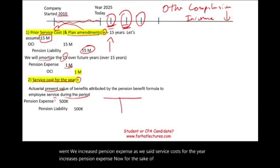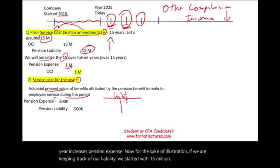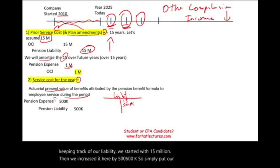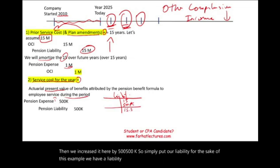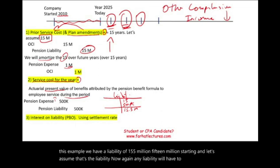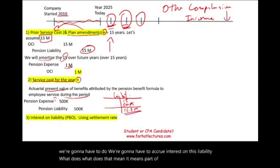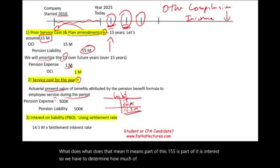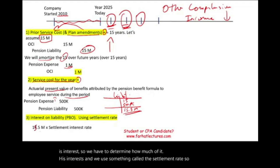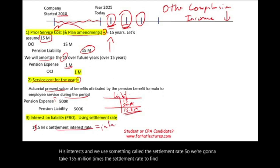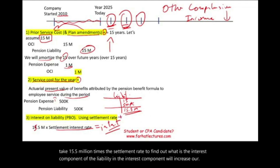Any liability will have to accrue interest. In our example we now have a pension liability of $15.5 million, and we have to determine how much of it is interest. We use something called the settlement rate: $15.5 million times the settlement rate gives us the interest component of the liability. That interest component will increase our pension expense — this is the third component.